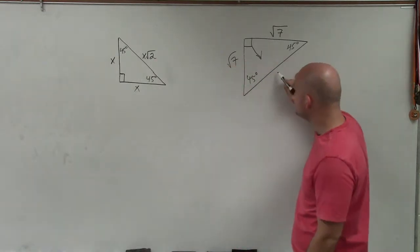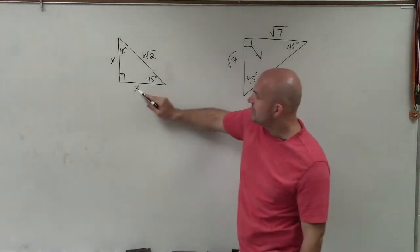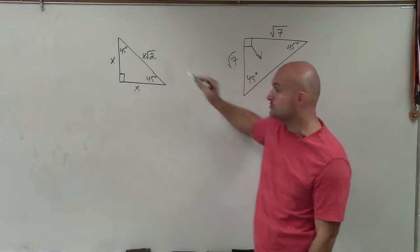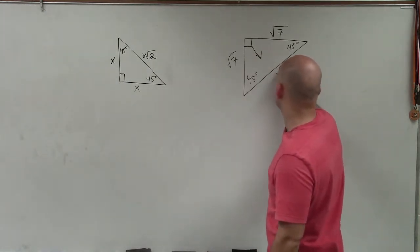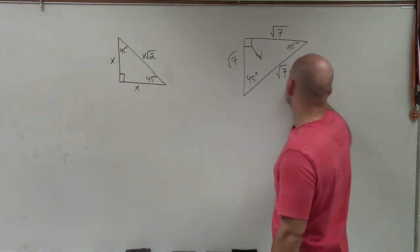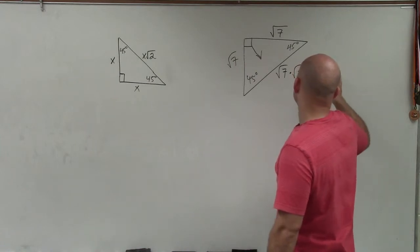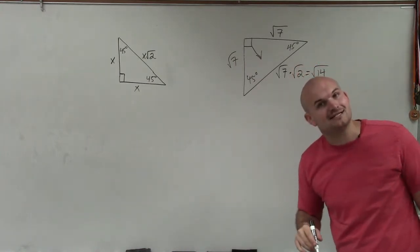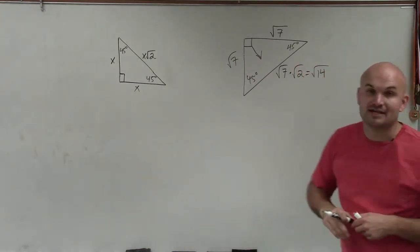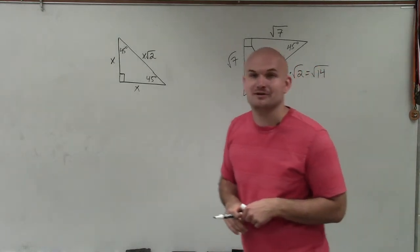Now, to get to my hypotenuse, all I simply need to do is take whatever my leg is and multiply it by the square root of 2. So therefore, I have the square root of 7 times the square root of 2, which equals the square root of 14, which I cannot simplify. So that would be my final answer for the missing leg and hypotenuse. Thanks.